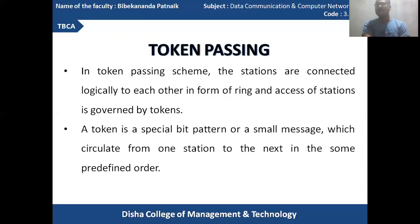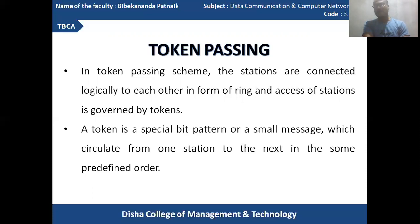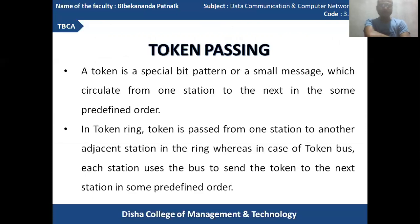The network provides a token to the stations through which they can act. A token is a special bit pattern — a small particular message — that circulates from one station to the next in a predefined order. This is similar to standing in a queue where the first person has priority one, followed by two, three, four, five, six, and so on. This predefined order is the sequence of the token or bit pattern provided by the network.